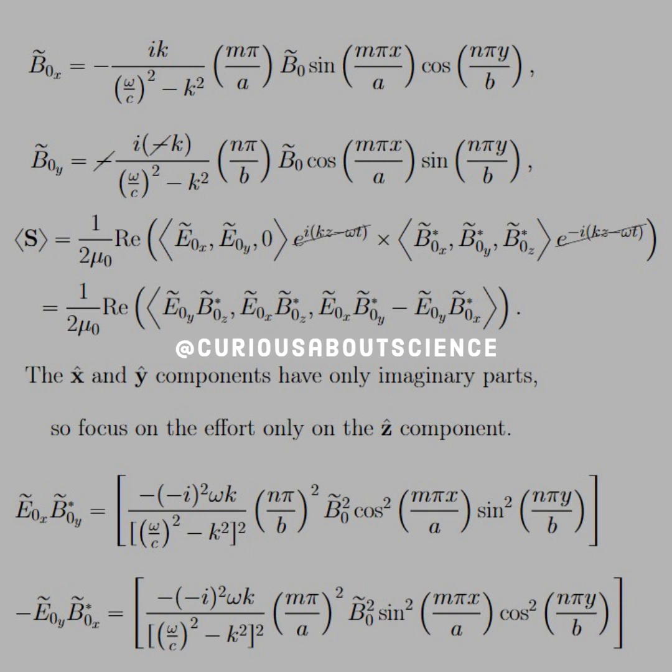Okay, so why do we do all that? Well, we need the components in order to take the curls and the dot products. So for the pointing vector, what we have is E naught X, E naught Y, and zero for the E field.